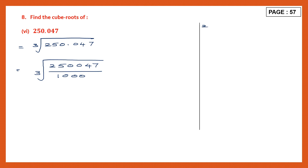Let's write that: 250047. Now it's ending in 7, so it's not divisible by 2. Is it divisible by 3? Let's add it up — 2 plus 5 is 7, 7 plus 4 is 11, 11 plus 7 is 18. Yes, 18 is in the tables of 3. So this number is divisible by 3. So let's divide it by 3.